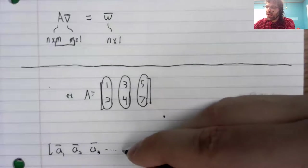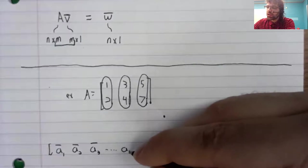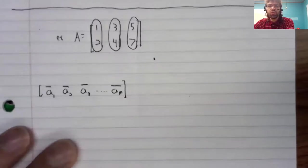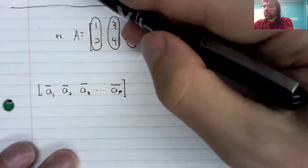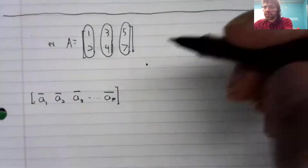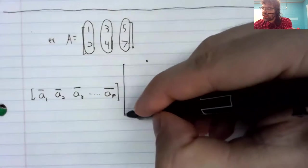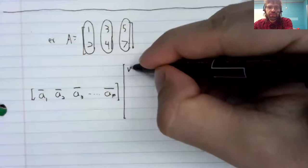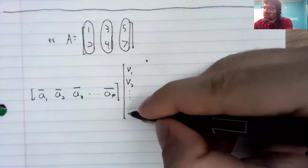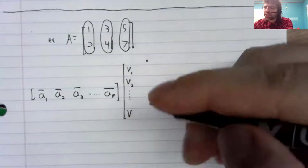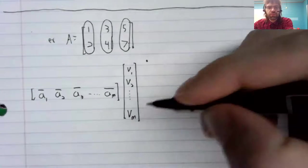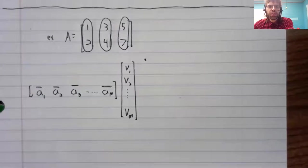It has M columns in total. And we're multiplying it by a vector V. And V has as many entries as this matrix has columns. It has M entries.